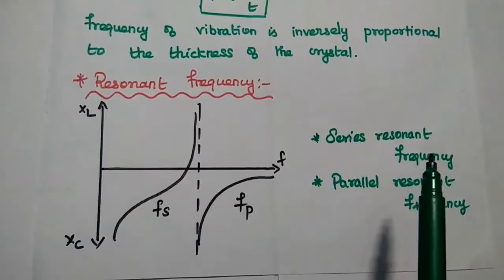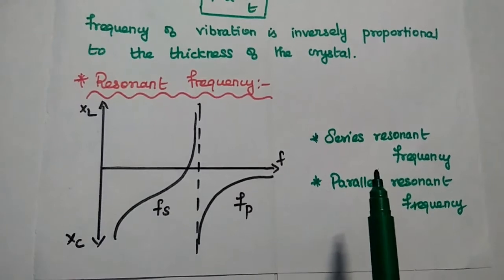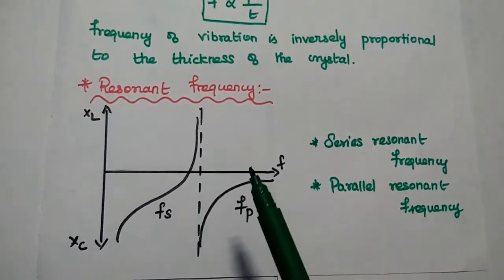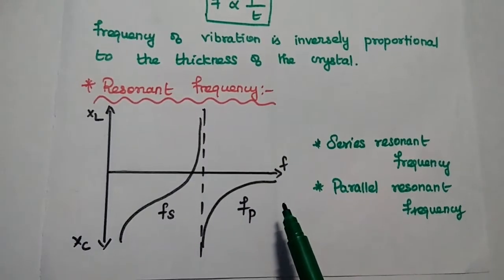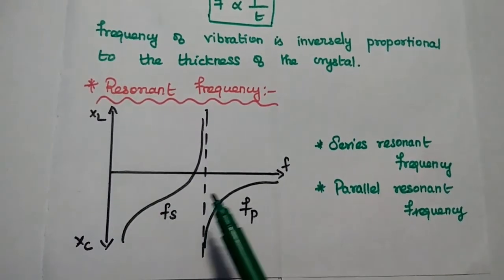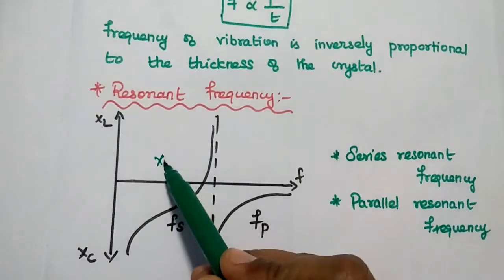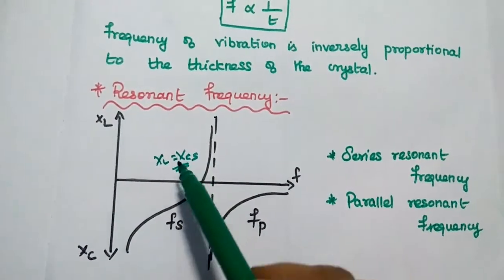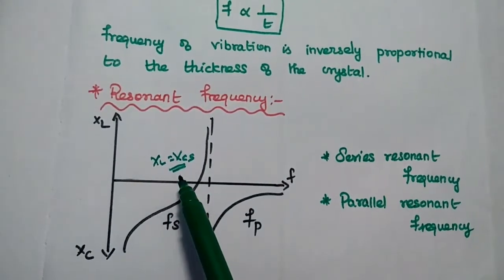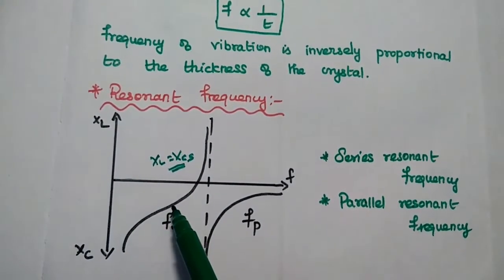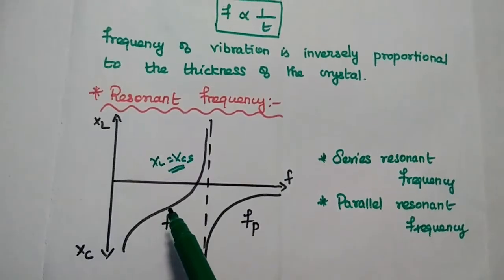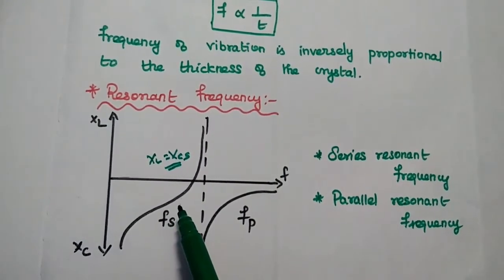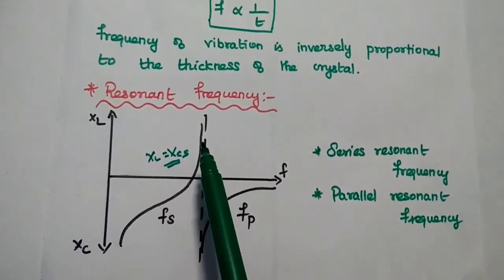There are two types of resonant frequencies available in a crystal oscillator: series resonant frequency and parallel resonant frequency. In the series resonant frequency, when XL is equal to XCS on the series side, both reactance values are equal. The impedance is purely resistance alone — a smaller value — and it provides the maximum oscillating frequency.